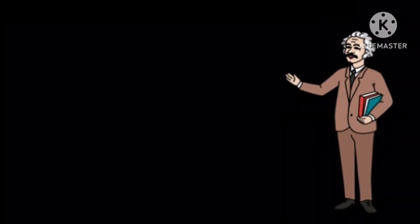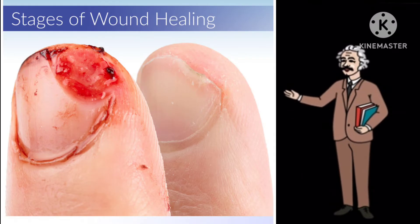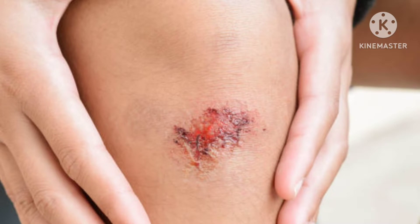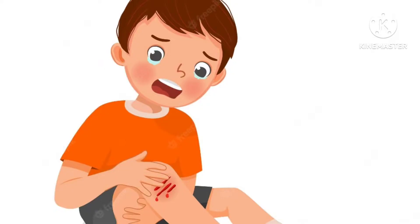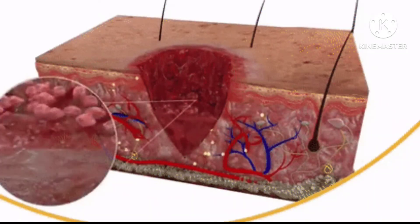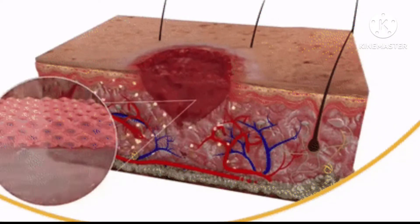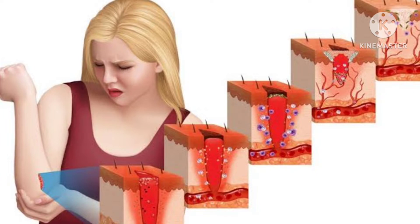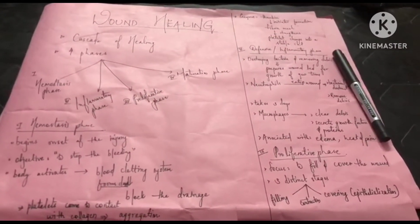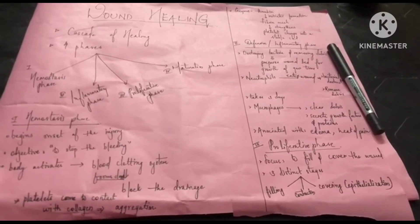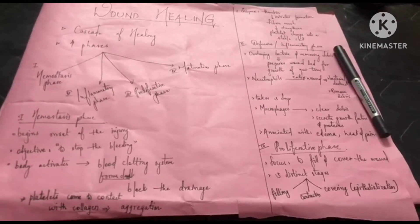Hi guys, welcome back to our channel. In this video we are going to discuss second year BSc nursing medical surgical nursing, and the topic is wound healing. Wound healing or wound repair is the body's natural process of restoring normal function and structure after an injury, so that's why we call it the natural process of wound healing.